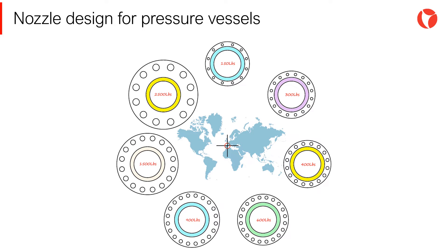If pressure-temperature requirements increase, we will need a stronger flange. Therefore, we will need to move clockwise towards classes 300, 600, and 2500.